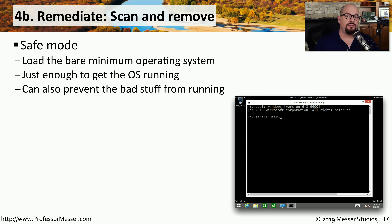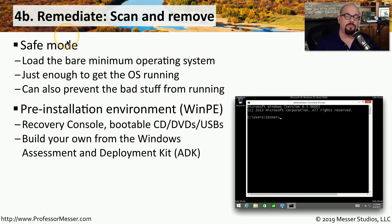Some malware may prevent your system from booting into the normal desktop. In those cases, you may want to try booting into safe mode, which brings up a bare version of the operating system from which you can run your antivirus or anti-malware software. Another option is to boot from removable media containing a WinPE — a Windows Pre-installation Environment — which is a bare-bones version of Windows that can boot the system to a point where you can run other applications.